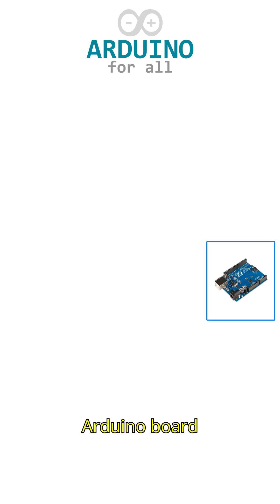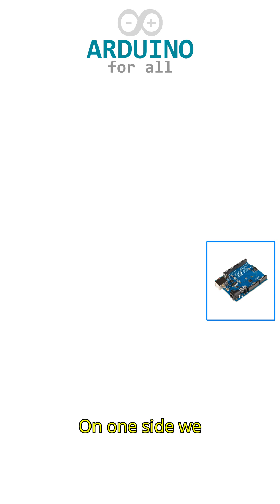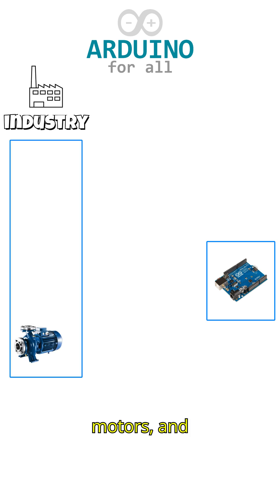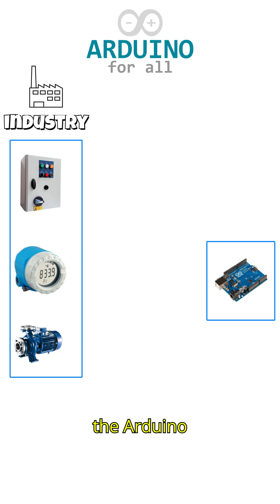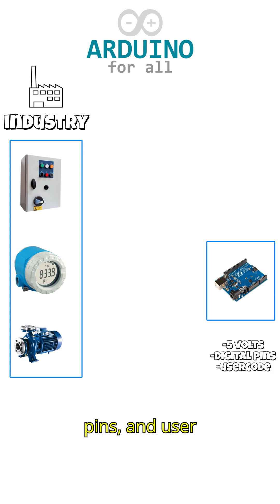Imagine an Arduino board at the center of a process. On one side, we have the industrial world: machines, sensors, motors, and large control panels. On the other side, the Arduino with its simple logic levels of 5 volts, digital pins, and user code.